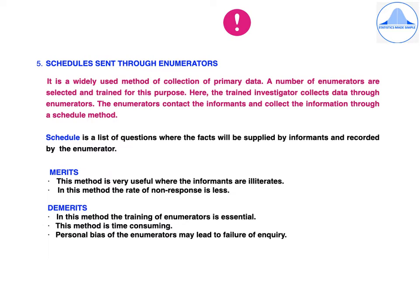Next is the schedule sent through enumerators — a widely used method of primary data collection. A number of enumerators are selected and trained. The trained investigator collects data through enumerators who contact informants and collect information through a scheduled method. A schedule is a list of questions where facts are supplied by informants and recorded by the enumerator. Merits: very useful where informants are illiterates and the rate of non-response is lesser. Demerits: training of enumerators is essential, it is time consuming, and personal bias of enumerators may lead to failure of enquiry.